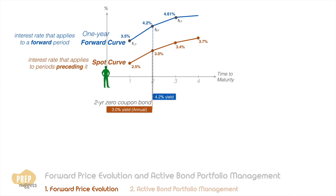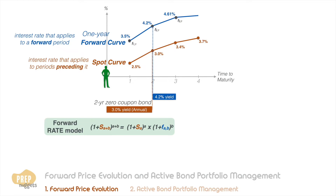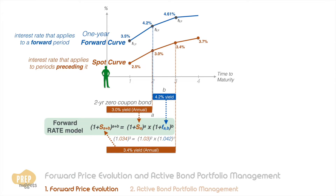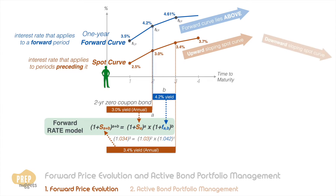The points on the forward curve denote the interest that applies to the forward period, so be very clear on this major distinction between spot and forward rates. Even though these two rates are plotted on the same graph, their coverage period differs. Based on the principle of no arbitrage, the forward rate can be derived from the yield of a longer zero coupon bond divided by the yield of a shorter bond. When the spot curve is upward sloping, the forward curve should lie above it, as in this case.